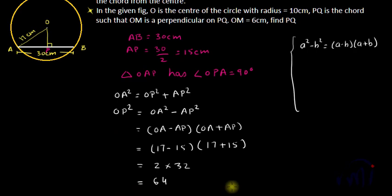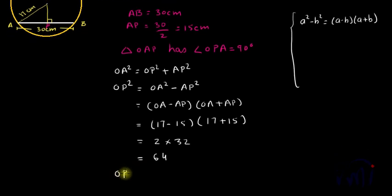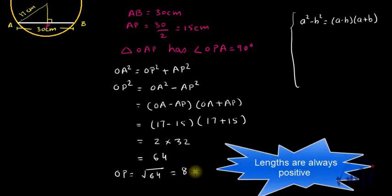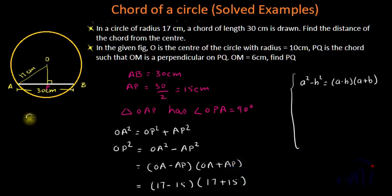So OP square is 64, or we can say OP is equal to square root of 64, that is 8 centimeters. We have found that OP is equal to 8 centimeters.